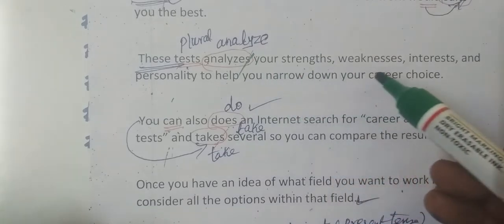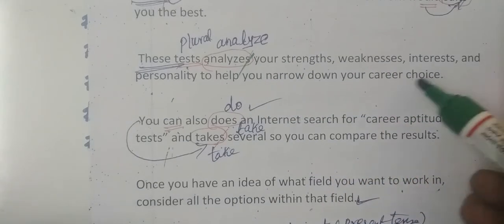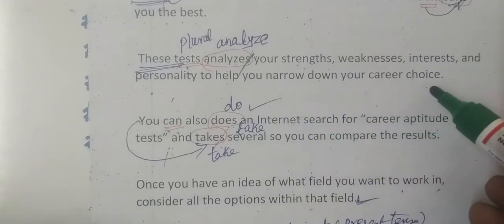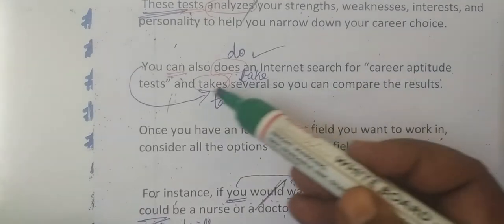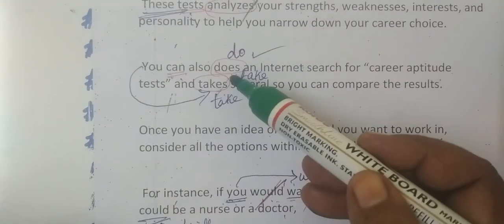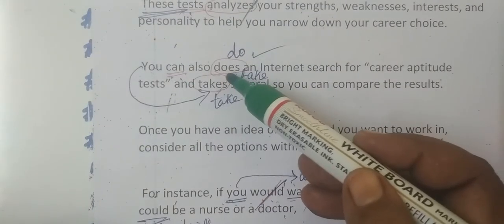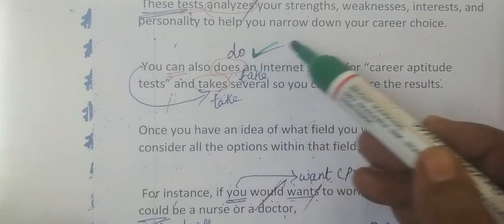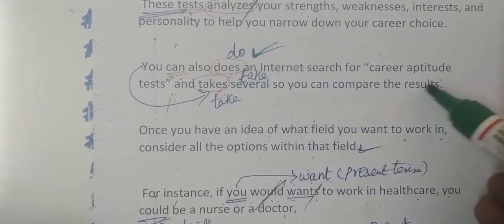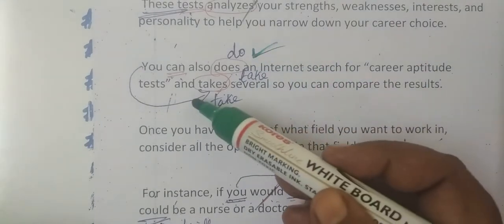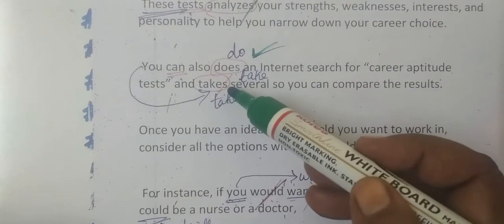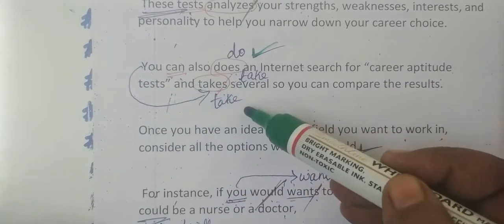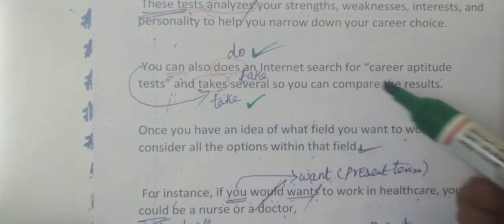It analyzes your strength, weakness, interest, and personality to narrow down career choice. Then 'career aptitude test takes you' — 'takes' is wrong. Correct one is 'take'. The career aptitude test 'takes' becomes 'take' — correct.